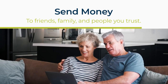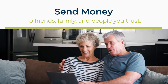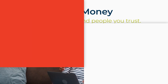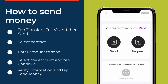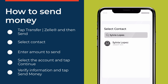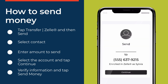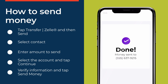Once you're set up, start using Zelle to easily transfer money with people you trust. In the app, tap Transfer Zelle and tap Send. Then enter your contact's information or select them from your contact list. Enter the amount, then select the account and tap Continue. Verify all the information is correct and send.